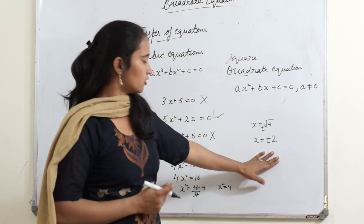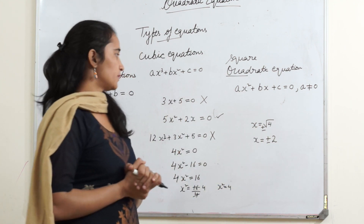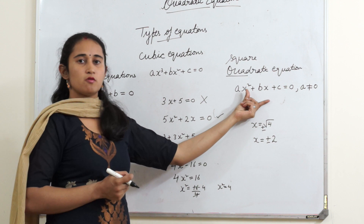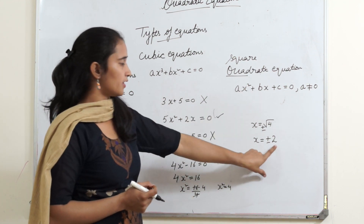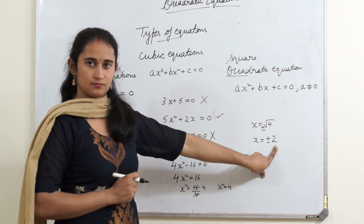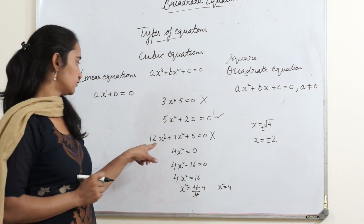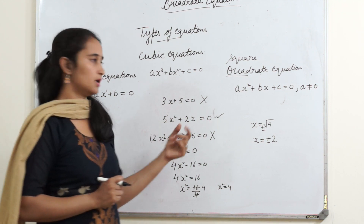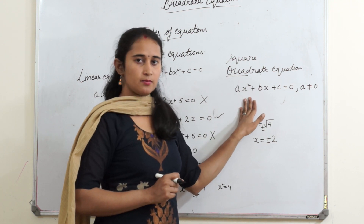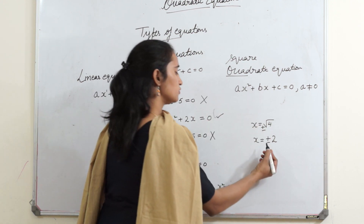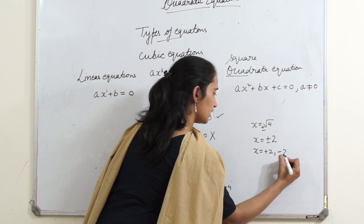You might be thinking why I got 2 answers. Because x has highest degree 2, that's why I am getting 2 answers. If you have a cubic equation where highest degree is 3, then you will get 3 answers for x. Because x is a variable with 2 different values here — x squared means x is a variable with 2 different values. So those 2 different values are x equals plus 2 and minus 2.